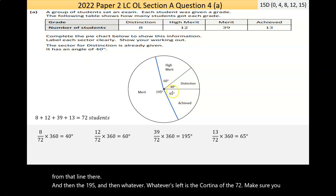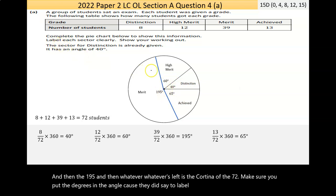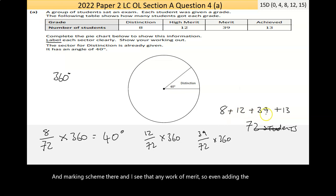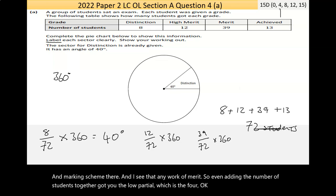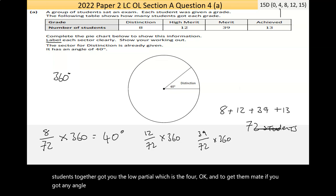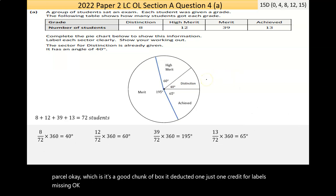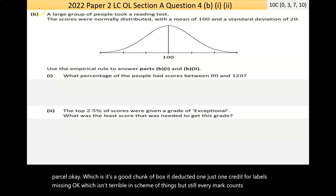Make sure you put the degrees in the angle because they did say to label each sector clearly. I've put in high merit, distinction, achieved, and merit. Checking the marking scheme, any work of merit, even adding the number of students together, got you the low partial which is the four marks. To get the mid partial, if you got any angle correctly labeled on the pie chart, you got up to the mid. They deducted just one credit for labels missing, which isn't terrible, but still every mark counts.